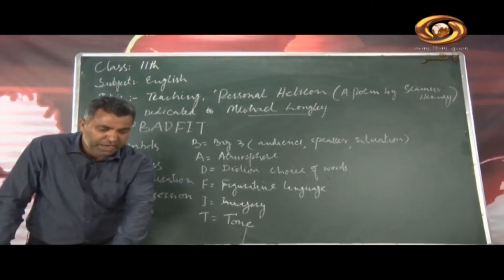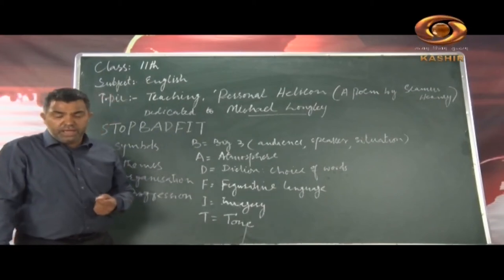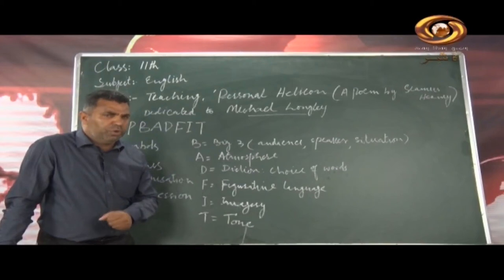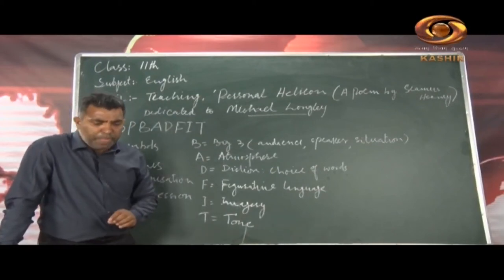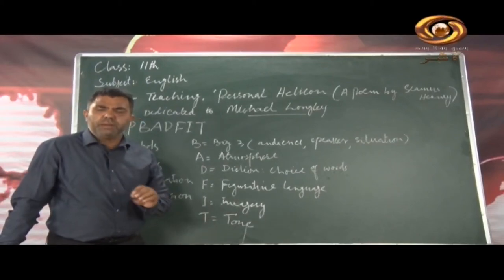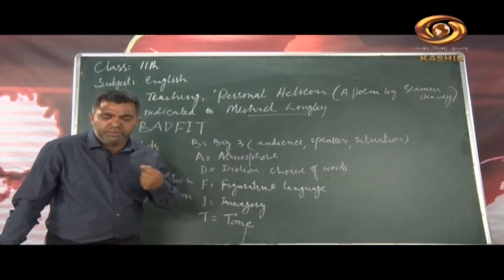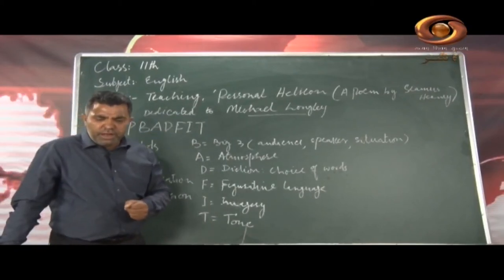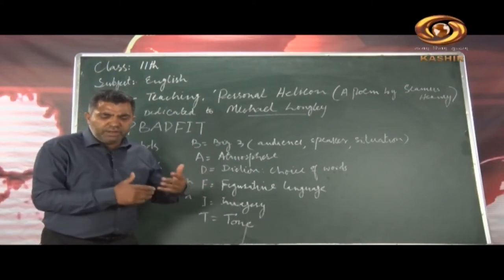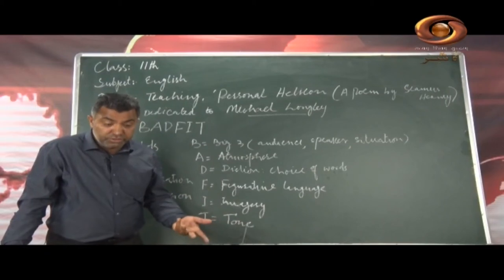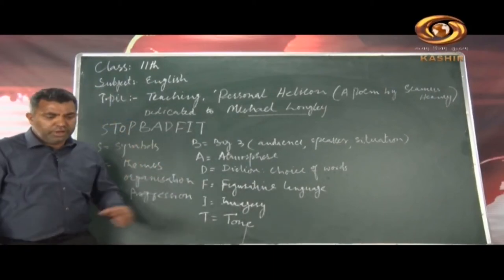We can comprehend this poem at two levels — denotative and connotative. Denotatively: in Ireland, there are many wells named after saints and poets. This poet was inspired by wells. In his childhood, Heaney played near the wells and watched the drawing of water with buckets. Wells were his way of personal reflection and understanding of the natural world. He sees his reflection and the reflection of the sky in the well, fascinated by how the sky is trapped in a well.